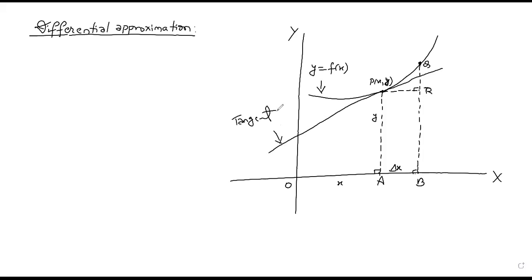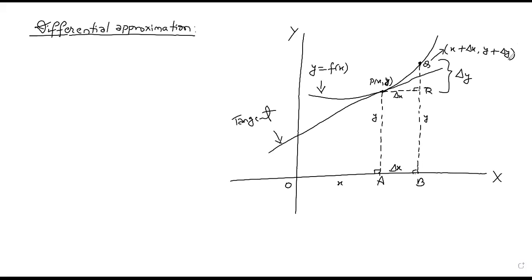The horizontal distance PR corresponds to delta x, and QR is named delta y. The coordinate of Q is (x plus delta x, y plus delta y).